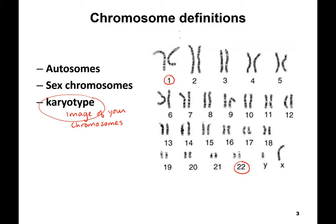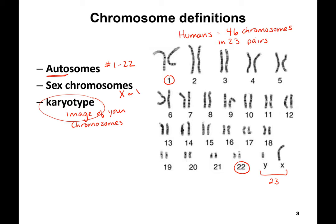This is for a human — humans have 46 chromosomes in 23 pairs. You've got 22 pairs, and then your sex chromosomes are the 23rd pair. Chromosomes 1 through 22 are called autosomes — 'auto' also means 'body' — so they're just the regular chromosomes. The sex chromosomes are the X and the Y.